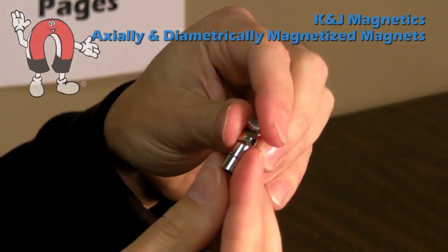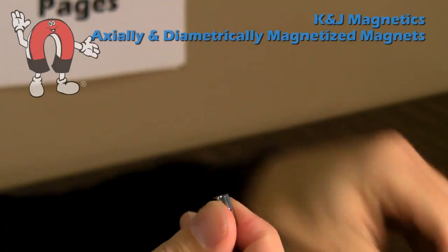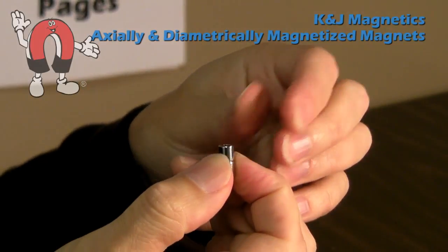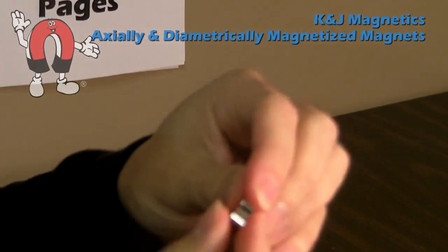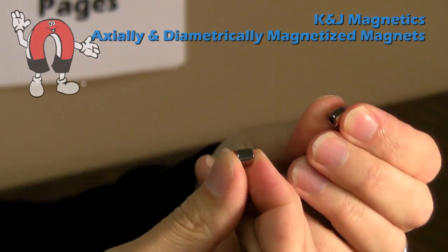Finally, we show the same sort of thing with some small ring magnets that we offer both axially and diametrically magnetized. These are R424 magnets. And these are their diametric counterpart, the R424 DIA.